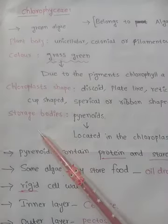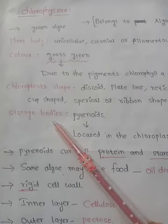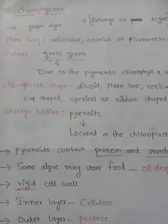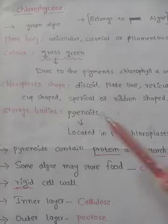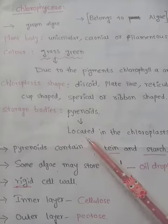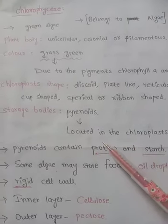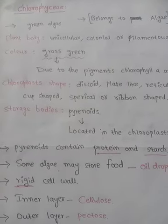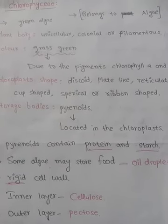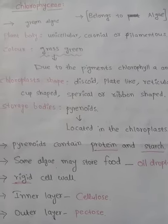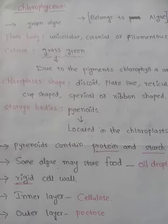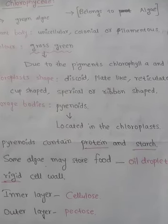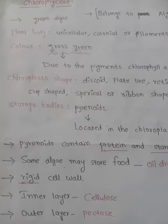They store the food material in the pyrenoids. These pyrenoids are located in the chloroplasts. The pyrenoids contain not only protein but also starch. In some algae, the food is stored in the form of oil droplets also.